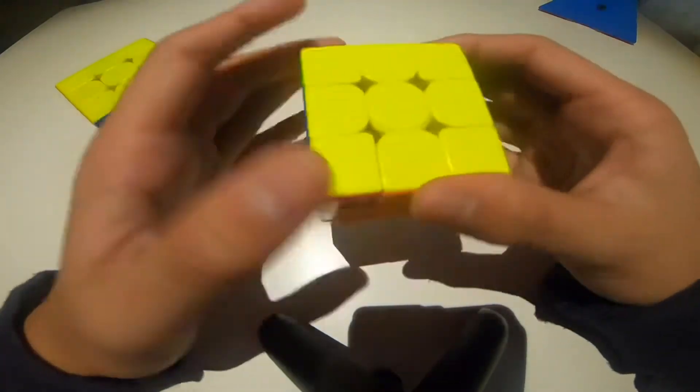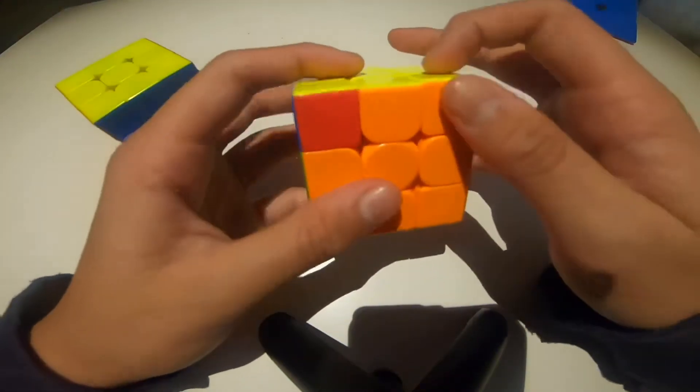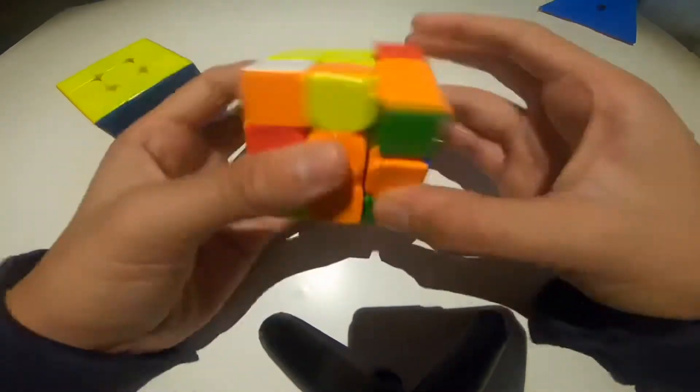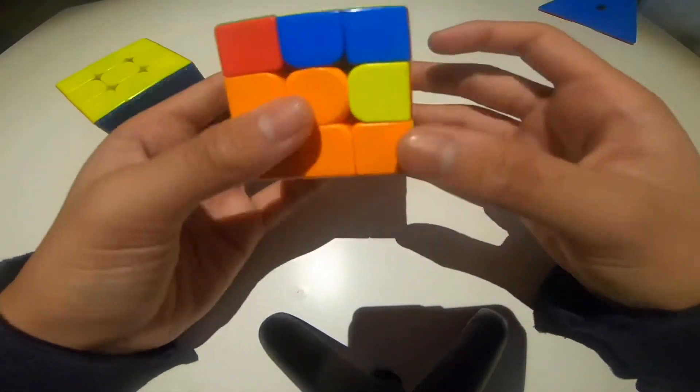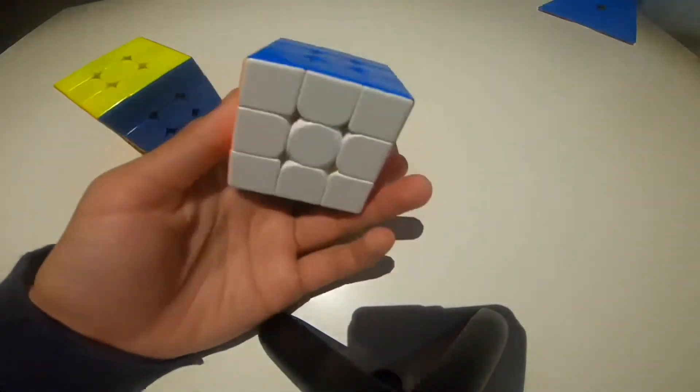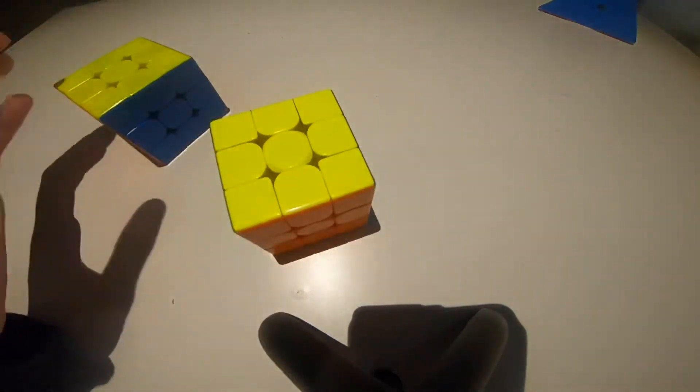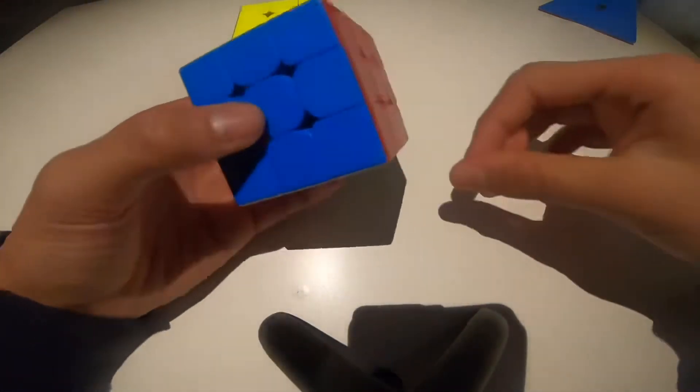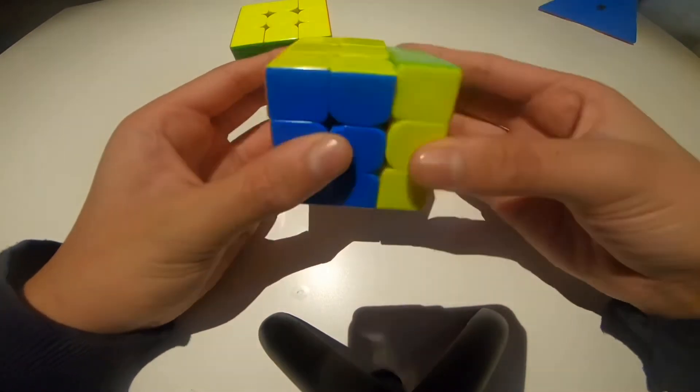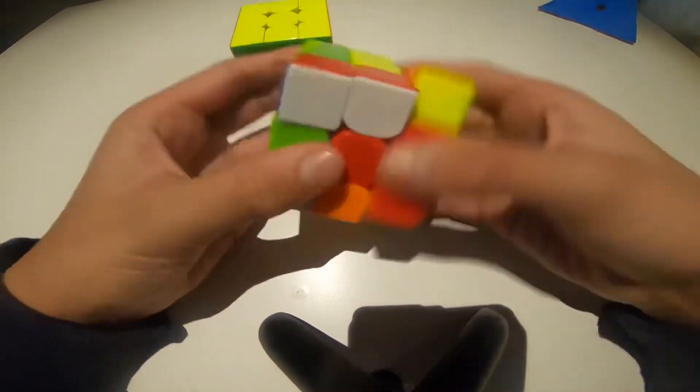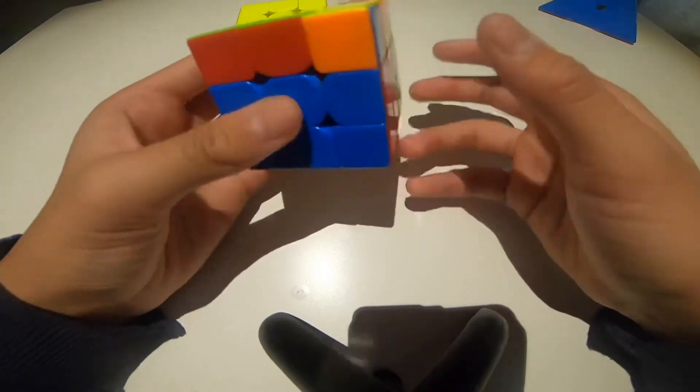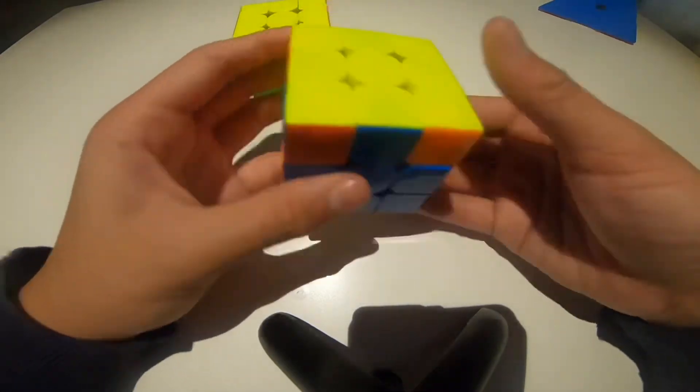And then you undo the moves. So if you use that in A-perm, it's really just R U R' U' and J-perm. And then you just undo the four moves at the beginning. So that's literally what I'm doing here. It's basically a three move setup into V-perm. And then you just undo the three moves.